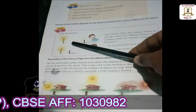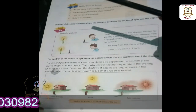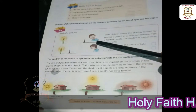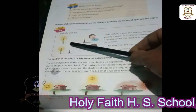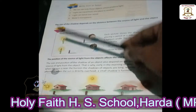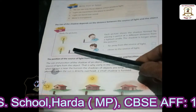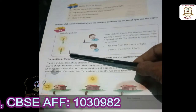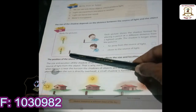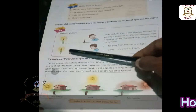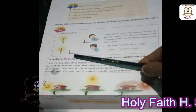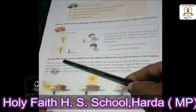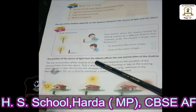The shadow is longer when the pencil is far away from the source of light. The shadow is shorter or smaller when the pencil is close to the source of light. The position of the source of light from the object affects the size and location of the shadow.